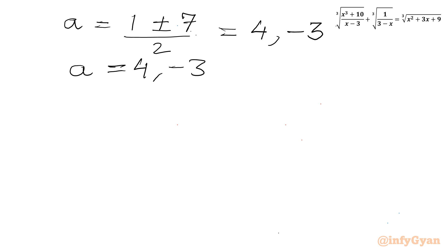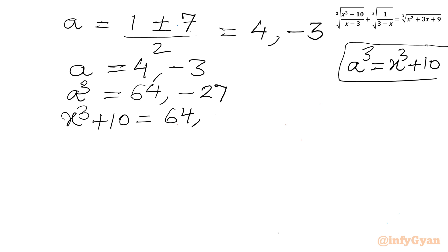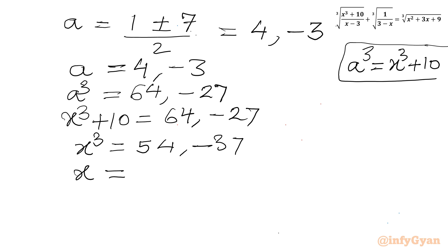Recalling the substitution a³ = x³ + 10: when a = 4, a³ = 64, so x³ + 10 = 64, giving x³ = 54, and x = ∛54 = 3∛2. When a = −3, a³ = −27, so x³ + 10 = −27, giving x³ = −37, and x = −∛37. Both methods confirm the same final answers.